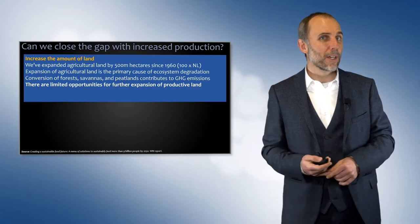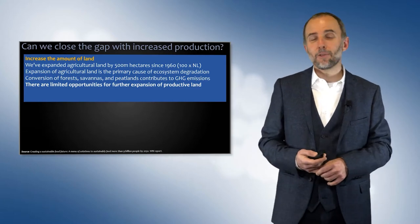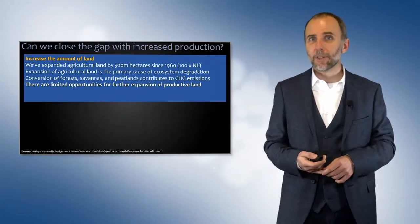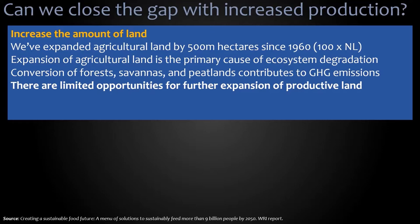If you look at what we've done in the past, remember that slide of how much of our land was actually used for agriculture. We've expanded the land by even 500 million hectares since 1960 — that's about 100 times the size of the Netherlands. But expansion of agricultural land is the primary cause of ecosystem degradation.